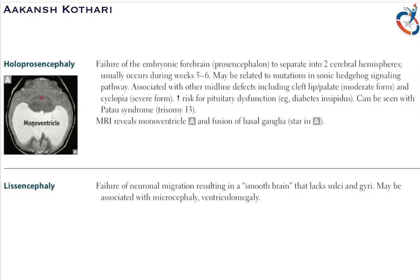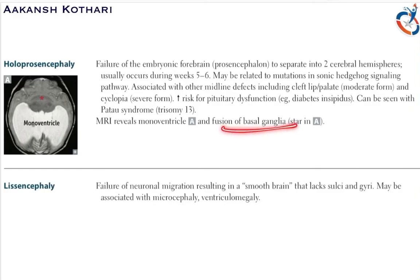On MRI of holoprosencephaly, we see a monoventricle — the ventricles do not separate, there is no separation of the cerebral hemispheres, and there is fusion of both basal ganglia.